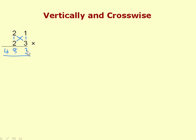It's easy to understand why it works. To get the first figure we multiply units by units, giving 3 units. To get the tens we multiply tens by units and units by tens, so the cross product automatically gathers up all the tens. Then tens times tens gives hundreds — that's 4 hundreds. That was a simple example with no carries, just to illustrate the pattern.